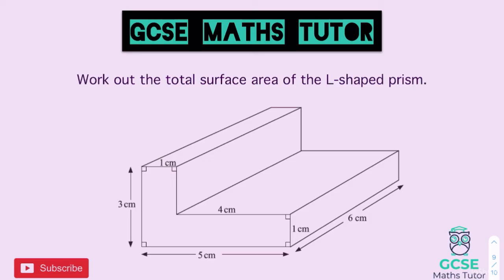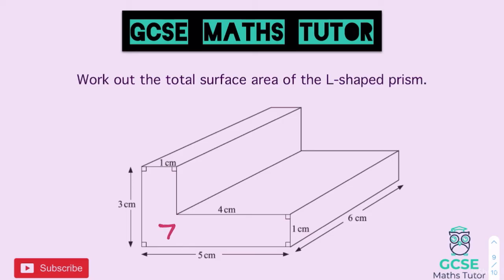Starting with the front L-shaped face: split it into two rectangles. The first piece has dimensions four and one, giving an area of four. The piece on the left has dimensions one and three, giving an area of three. The total front face area is seven. That's the same on the back, so two times seven gives us 14 for both L-shaped faces.